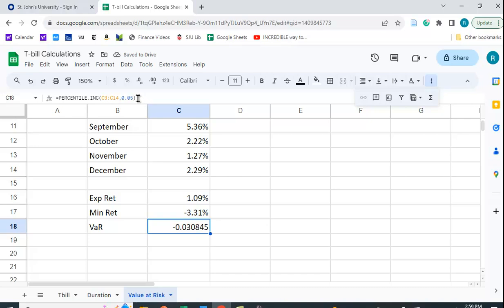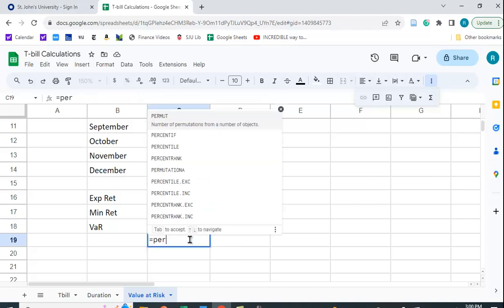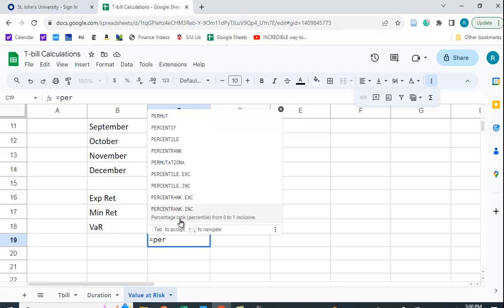Let me format that. So minus 3.08%. There is no 3.08%, but we feel 95% certain that we're not going to lose more than 3.08%. What if we wanted to do this for a 1% confidence or 99% confidence interval?